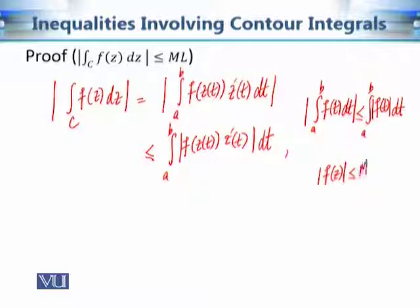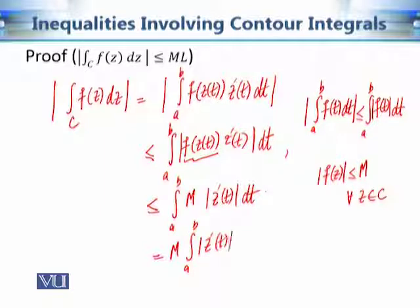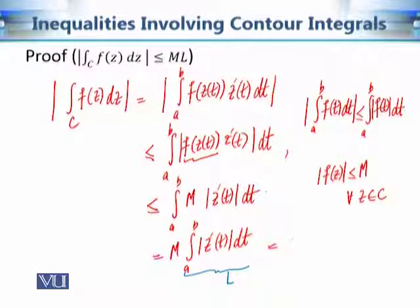Since z(t) are points of the contour, we can use |f(z(t))| ≤ M, so the expression is less than or equal to the integral from a to b of M·|z'(t)| dt. Since M is a constant, this becomes M times the integral from a to b of |z'(t)| dt. We know from our discussion of arc length that the integral from a to b of |z'(t)| dt is the arc length L of the contour C. Therefore the bound equals M·L, proving the ML inequality.